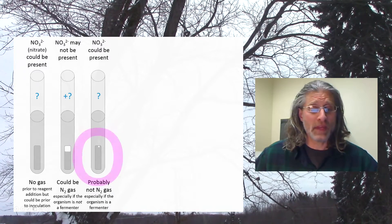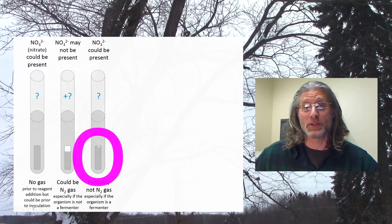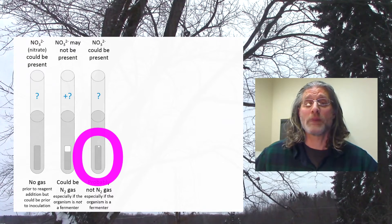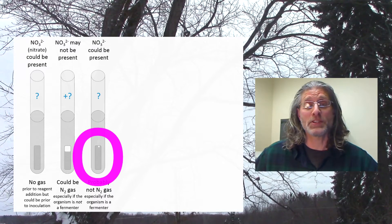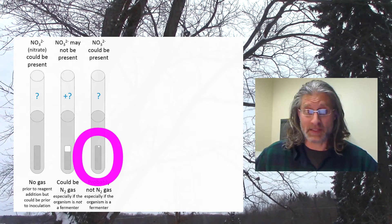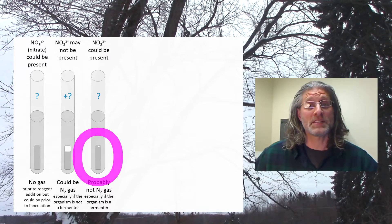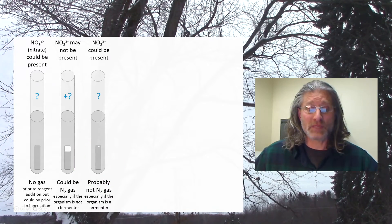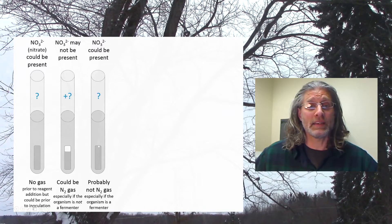Alternatively, you may see a small bubble in the Durham tube. This is not necessarily an indication that nitrogen gas has collected. The presence of the bubble may be inadvertent, somehow left over from the preparation of the medium, or it may be that the organism is a fermenter and the bubble represents a fermentative product. In any case, the presence of a small bubble is not indicative that nitrate has been reduced.